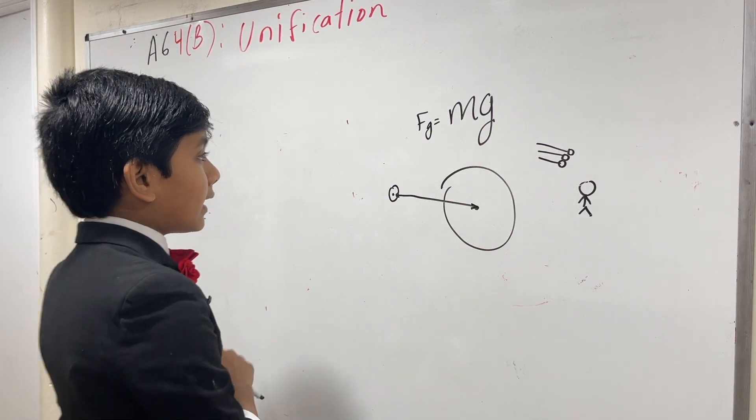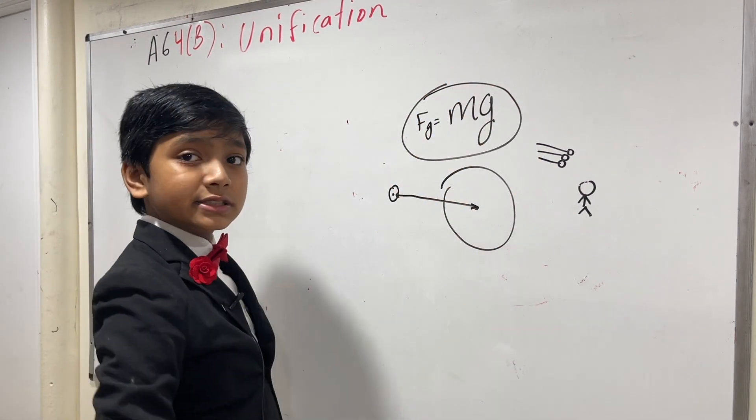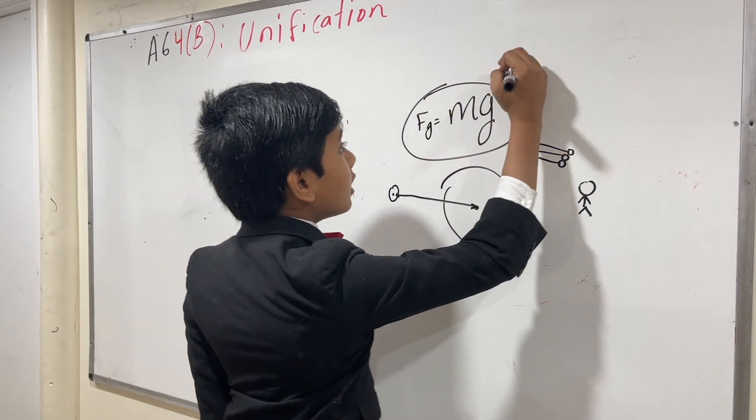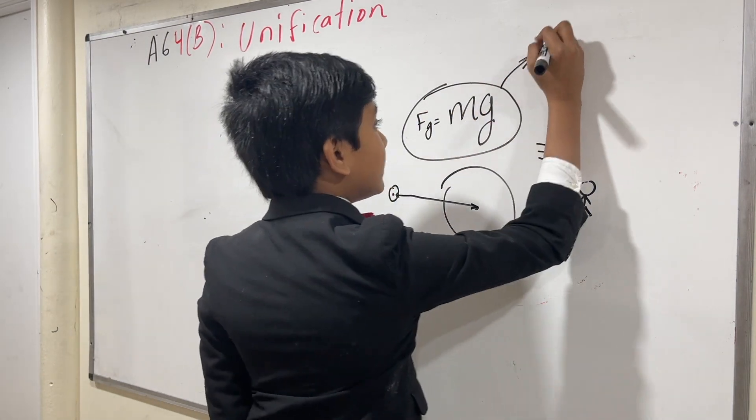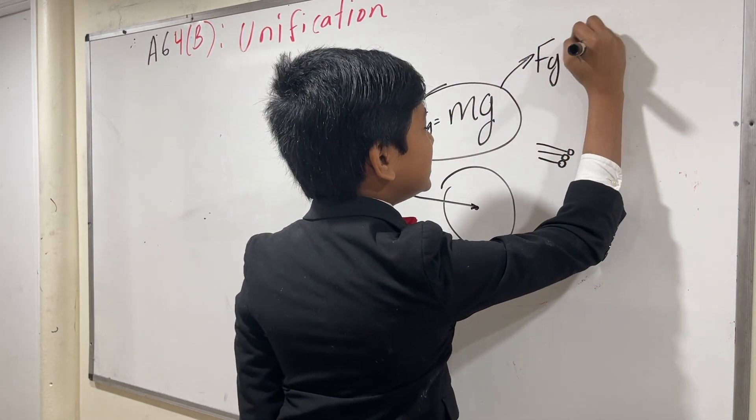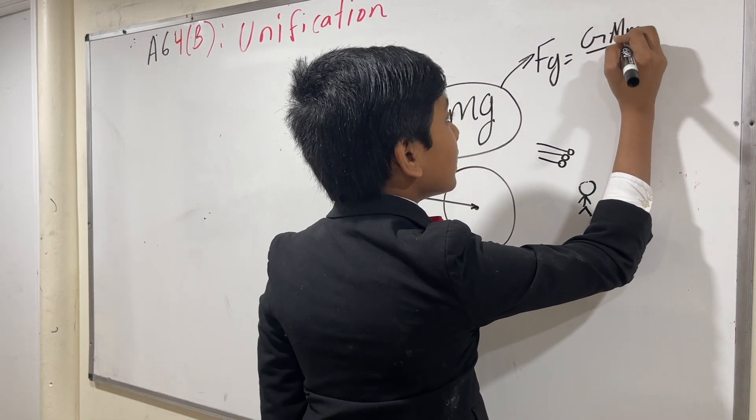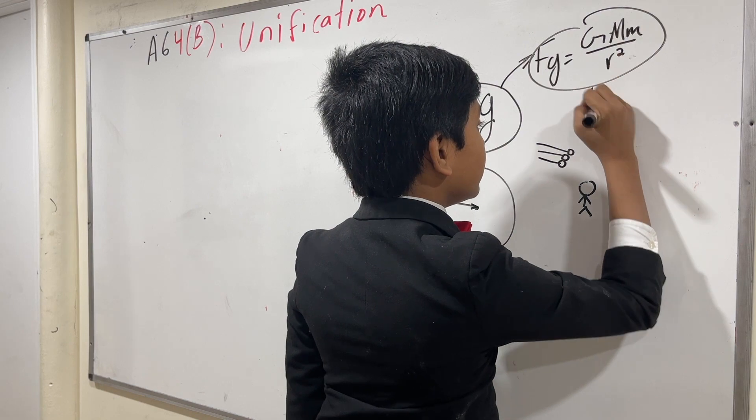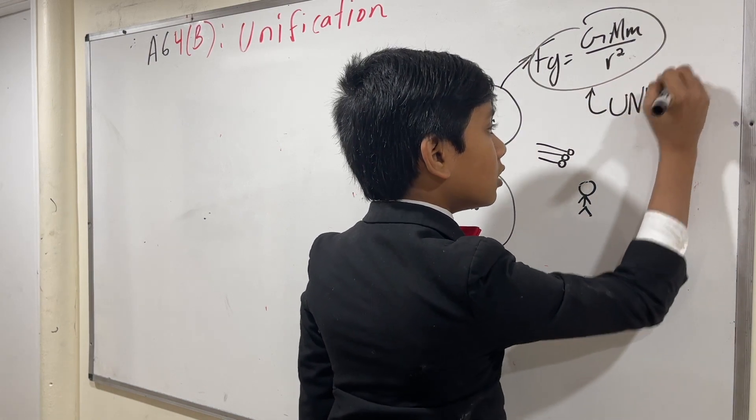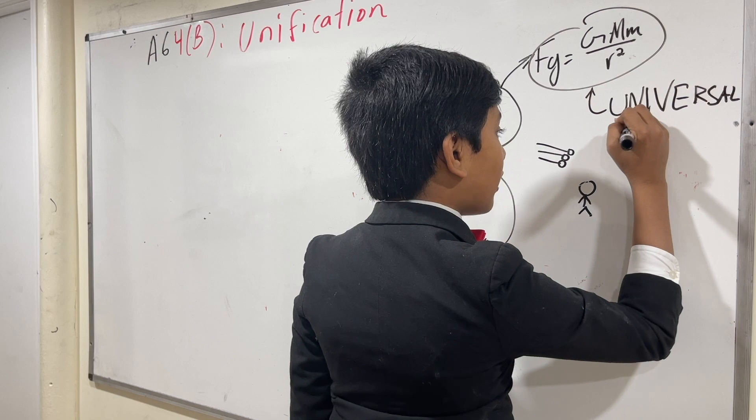So Newton, however, with this law, and not just this law, this law is for Earth. But with this law, Fg equals G big M little m over r squared. And that's why this is called the universal law of gravitation.